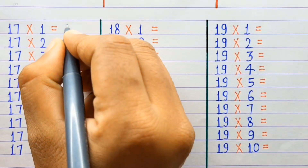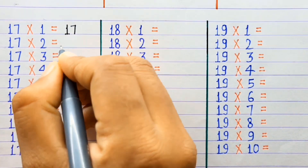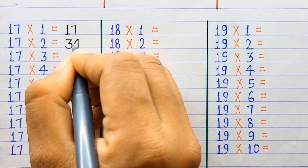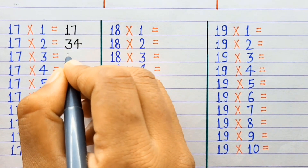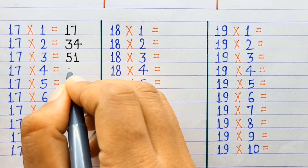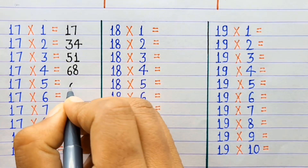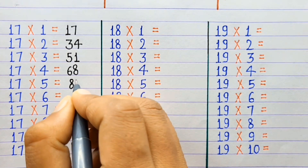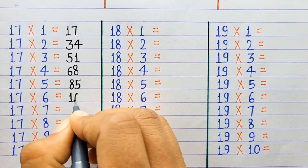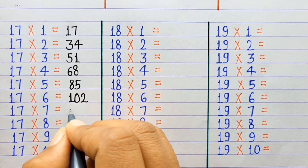17×1=17, 17×2=34, 17×3=51, 17×4=68, 17×5=85, 17×6=102.